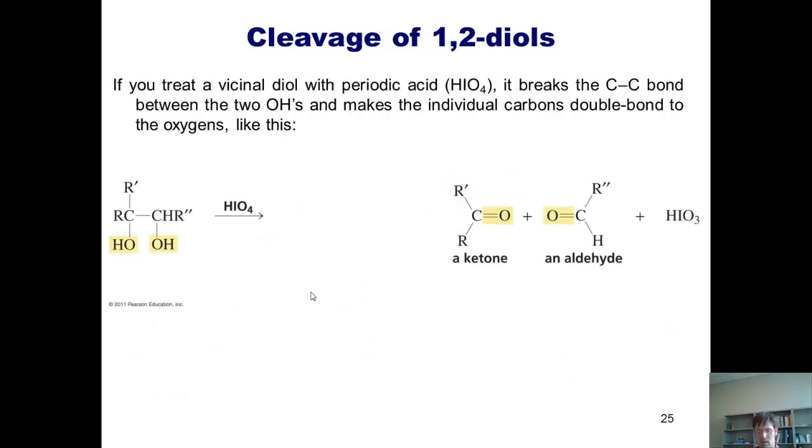If you take a 1,2-diol, that's what these kinds of compounds are called, and react it with periodic acid, HIO4, which I like to call HIO4, it actually cuts the bond between these two carbons just like a saw. It then takes the two carbon halves and installs double bonds between each of these two carbons and the oxygen to which they're attached, giving you these products. If you want to know the mechanism, this is sort of how it works partially. But once again, I don't require you to know it.